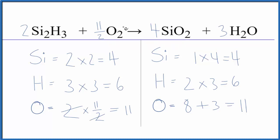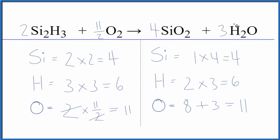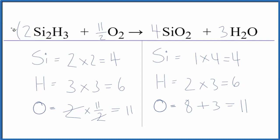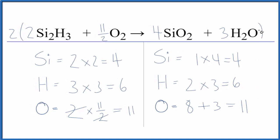Some teachers don't like having the fraction here, so we could change this to a whole number, everything to a whole number. If we multiply everything, the whole thing, all the coefficients, by 2, so that'll give us 4, 11, 8, and 6 as our coefficients.